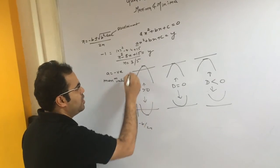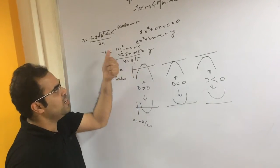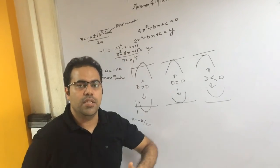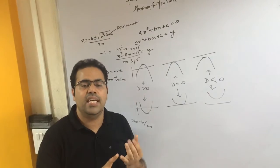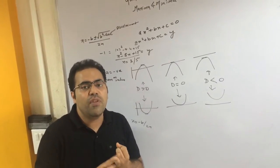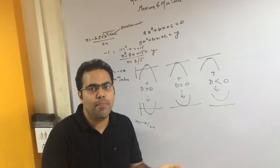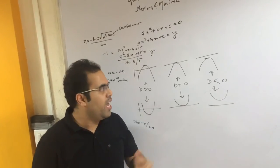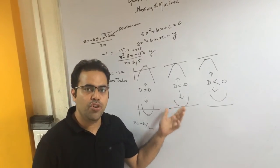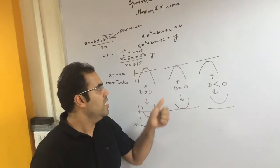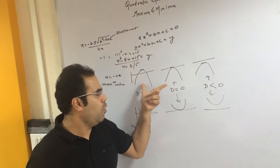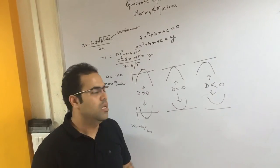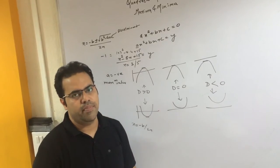To find the actual minimum or maximum value, substitute x = −b/2a back into the expression, just as we did in the worked example. When solving questions, be careful whether the question asks at what point the minimum or maximum value occurs, or what that minimum or maximum value is. This is an important concept for the CAT exam. I hope you've understood the concept completely — thank you for watching.